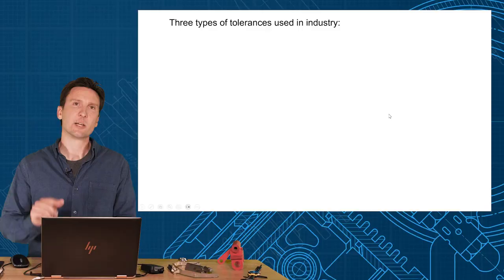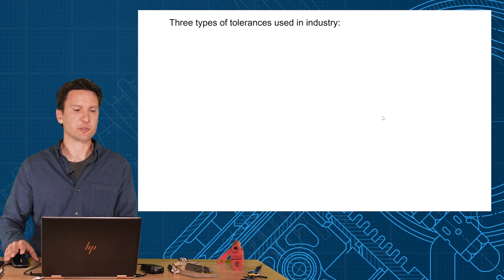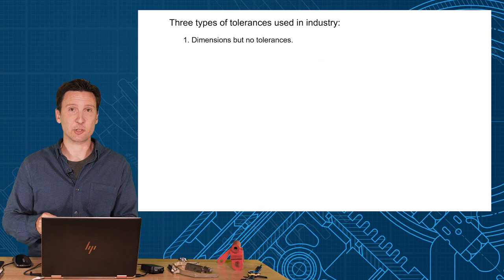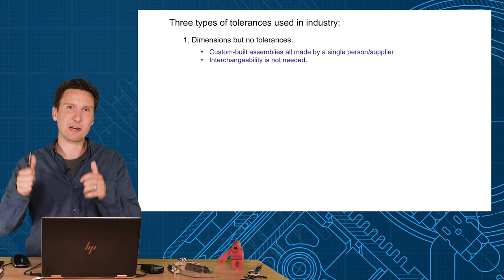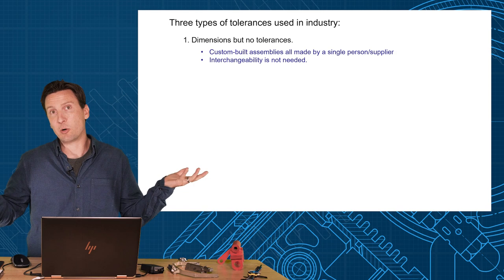I want to talk about the three different tolerances that I've seen in industry. Number one is just dimensions but no tolerance. This is your custom hot rod manufacturer. Everything's made by a single source supplier, and you can make everything custom-built in-house. This is actually what I use in my backyard. I built a shed the other day. I didn't use any tolerances. I had some dimensions that I shot for, but a lot of it had to be measure and then match, or match drilled in place. Don't expect the panel on my shed to fit with the neighbor's shed, because nothing's interchangeable. And that's okay. Sometimes you don't need interchangeability, and that's why you don't need tolerances.